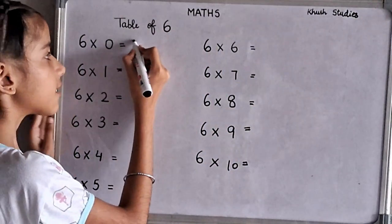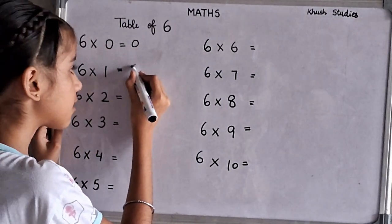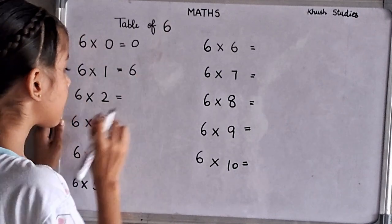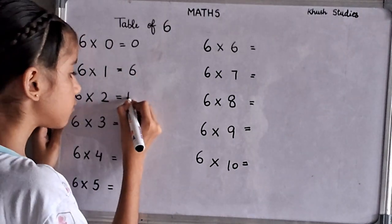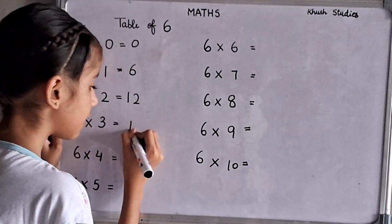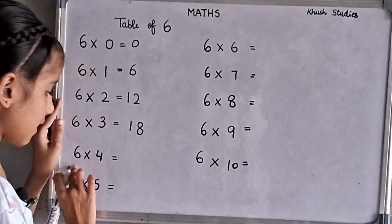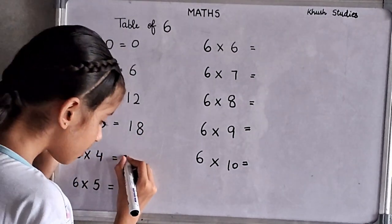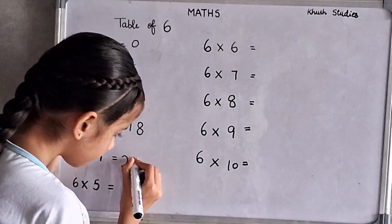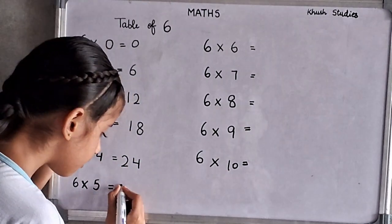6 zeros are 0. 6 ones are 6. 6 twos are 12. 6 threes are 18. 6 fours are 24. 6 fives are 30.